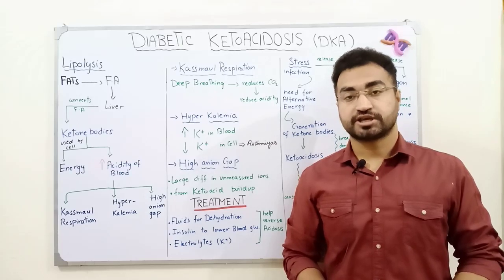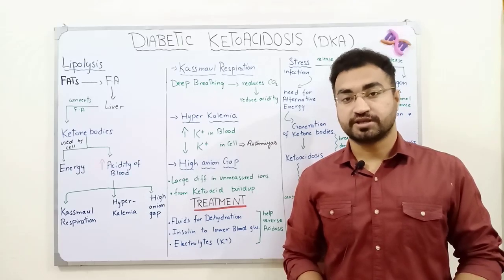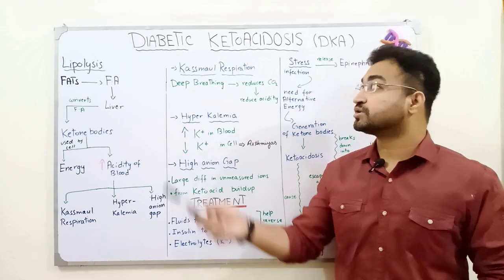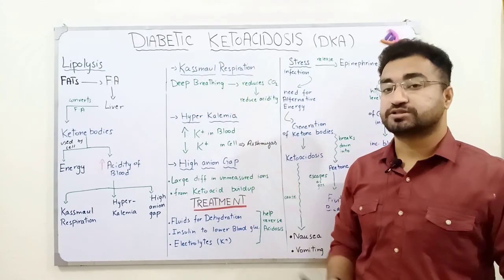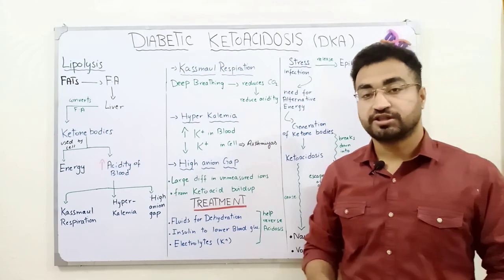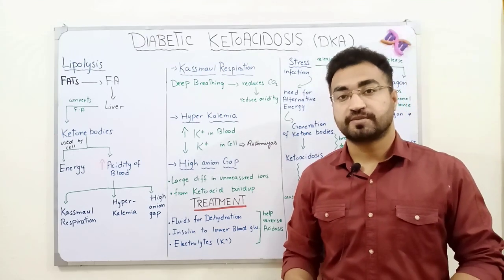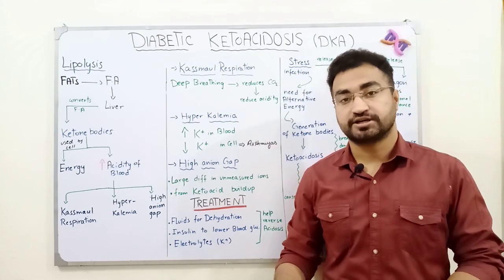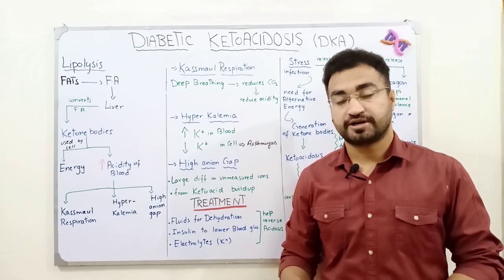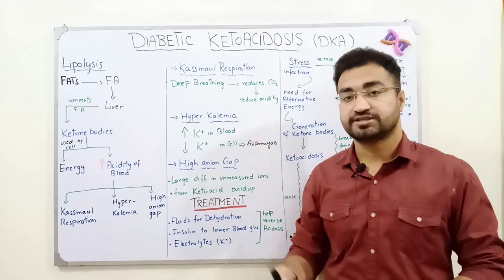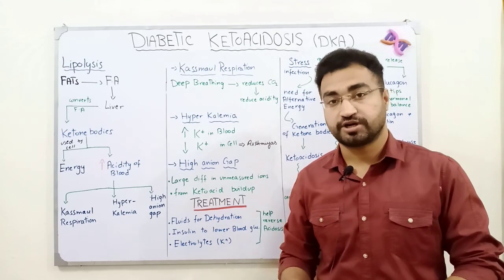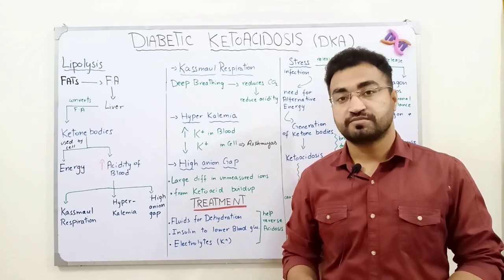Hello everyone, this is AB Hassan from IS Academia. Today we will be learning about diabetic ketoacidosis, also known as DKA. In the previous video lectures we studied about diabetes mellitus and its types. DKA is actually a complication of type 1 diabetes mellitus.